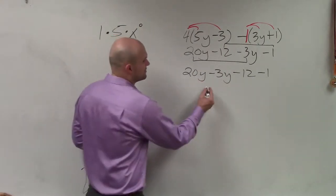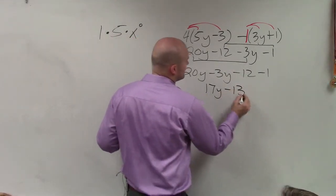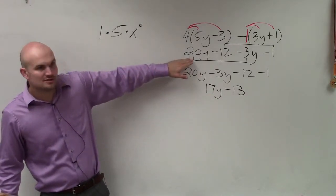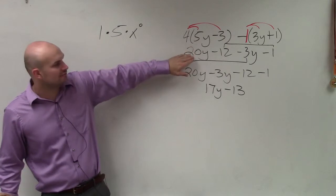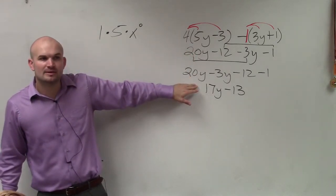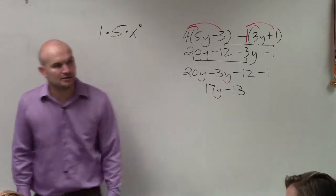So 20y minus 3y is going to be 17y. Negative 12 minus 1 is negative 13. A lot of students are going to make mistakes right on this step. So if you can't do it mentally or you know you're afraid of making some mistakes, just rewrite them so it looks a little bit easier to compute. And then just go ahead and combine. Remember, only combining your like terms.